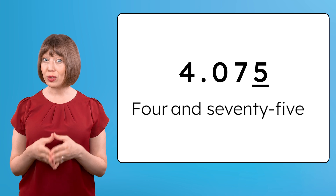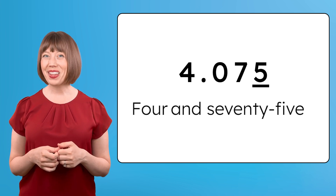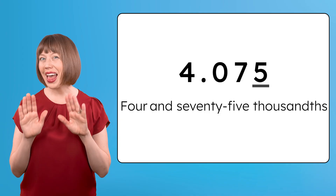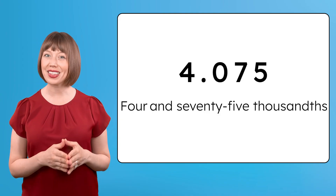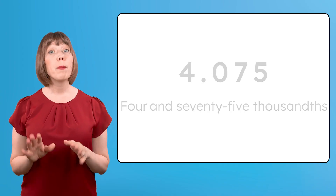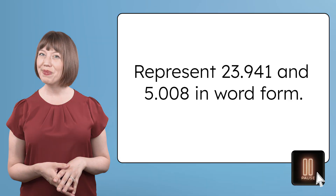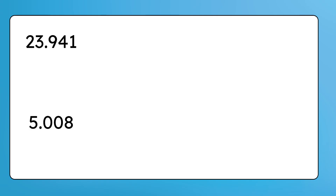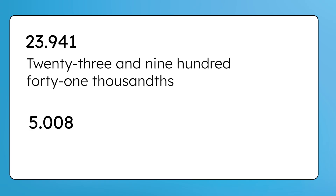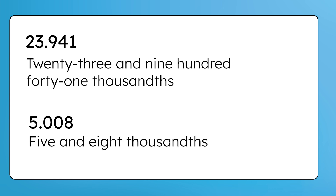Then we give the label for the place value where the last digit sits. Which place value do we use to name this number? Thousands! Put it all together, and this number is four and seventy-five thousandths. Let's practice with a few more numbers. Pause the video here to represent these decimal numbers in word form. What did you get? The first number is twenty-three and nine hundred forty-one thousandths, and the next number is five and eight thousandths. Just remember: read or say the digits after the decimal like a whole number, and then use the label of the last decimal place value name.